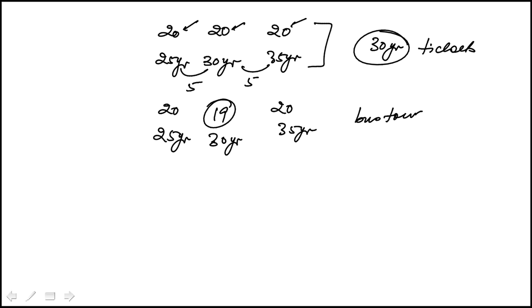So the key thing to remember here is that the new average is still 30 years. Because anytime you remove a value that's the same as the average, the new average of a set remains the same. That's the general result.